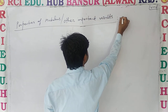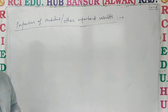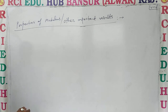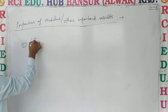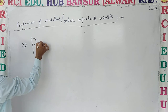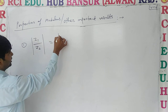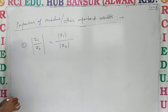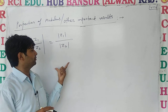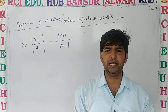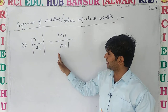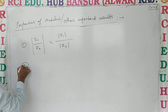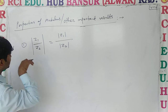देखिए, कुछ Properties हैं जो आपके Modulus पर Based हैं, और कुछ Important Results पर Based हैं। पहला: Z1 upon Z2 अगर कहीं भी दिखाई दे, तो आप Modulus of Z1 upon Modulus of Z2 लिखोगे। इन पर Based Questions मैं Open Line Class में कराऊंगा, लेकिन ये Formulas आप यहीं पर याद कर लें, आपके लिए Best रहेगा।